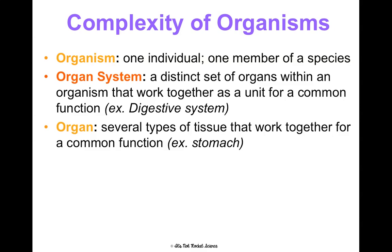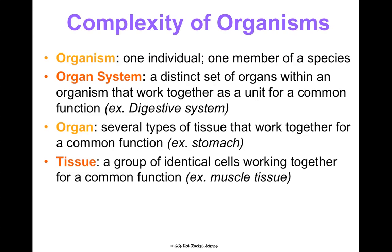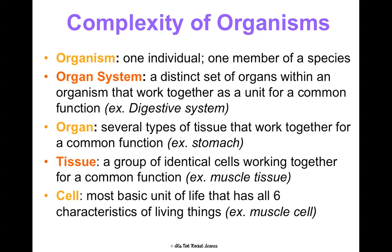Your intestines and your stomach and other organs work together to help you digest food and get energy from it. Organs are several types of tissues that work together for a common function — your stomach has several different tissues in it that work together to make it function. Tissues are groups of identical cells working together for a common function, like muscle tissue, which is a bunch of muscle cells working together. The cell is the most basic unit of life, and an example is a muscle cell.